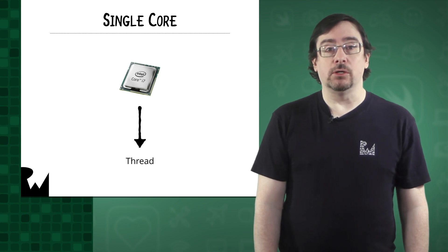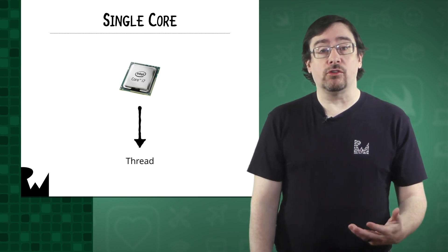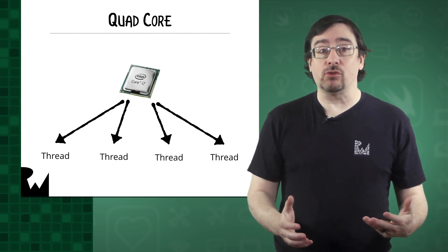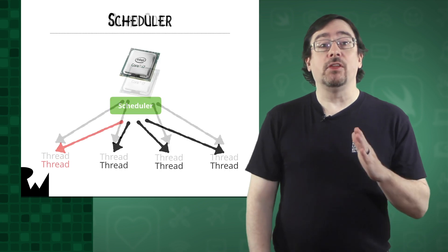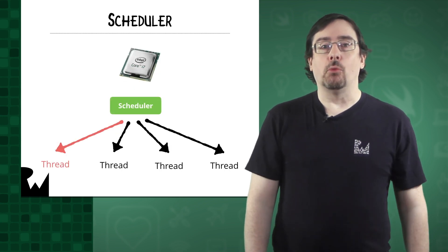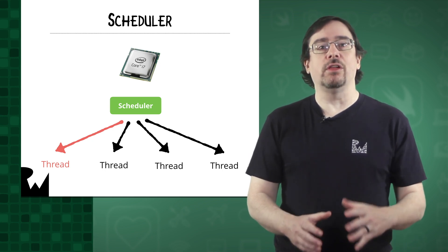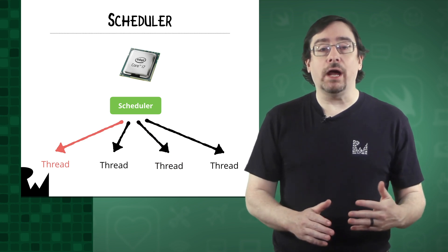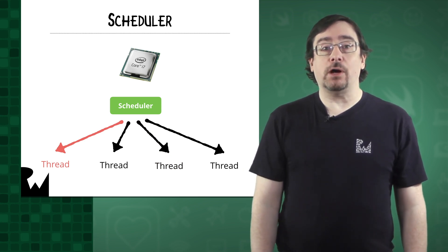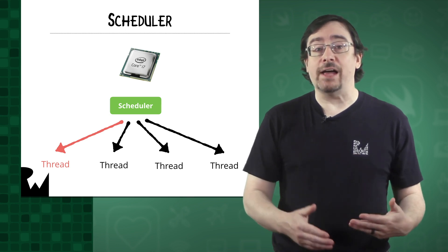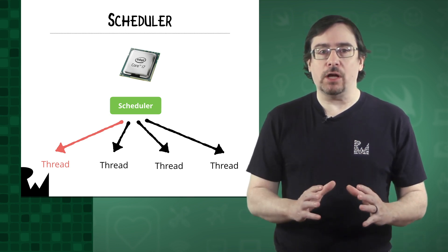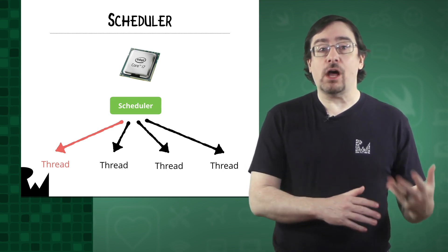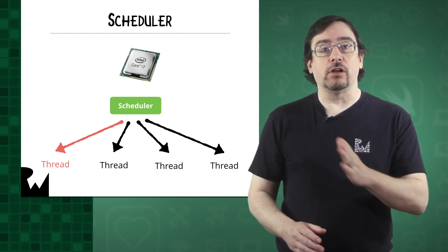A thread runs on a CPU core. The more cores a device has, the more threads that can run at the same time. If there are more threads than resources to run them, the CPU will switch between them. One moment a thread is trucking along drawing a circle on screen, and the next moment it's asleep. Moments later it's awake, unaware that it was ever asleep. Computers process information so fast we can't see the processing — if we could, using a computer would appear choppy and stuttering as all the various threads started and stopped.